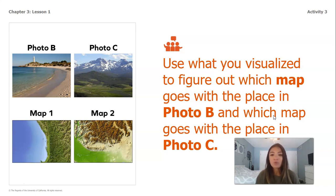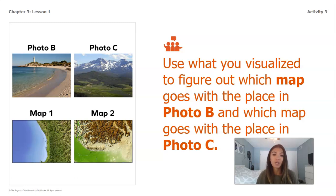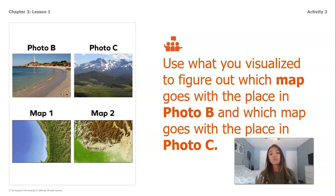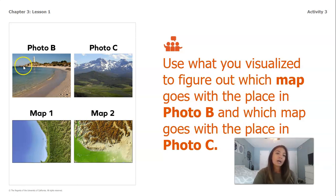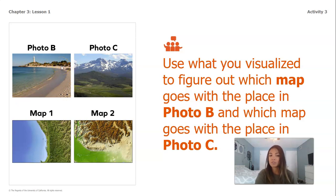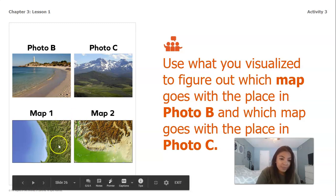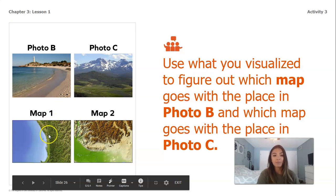So now you're going to use what you visualized to figure out which map goes with the place in photo B and which map goes with the place in photo C. Go ahead and pause this video and take a minute to try and match up which one goes with which. Then we'll quickly discuss it together. So if I'm looking at photo B, I see that there's water and it looks like it's mostly lowland around the water. I don't see any hills. I don't see any mountains. So I can see the water and the green showing lowland, so I know that photo B and map one match up.